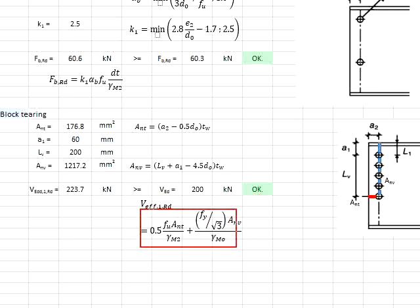Substitute into the relevant value, you will obtain your resistance for the block tearing is 223.7 kN.